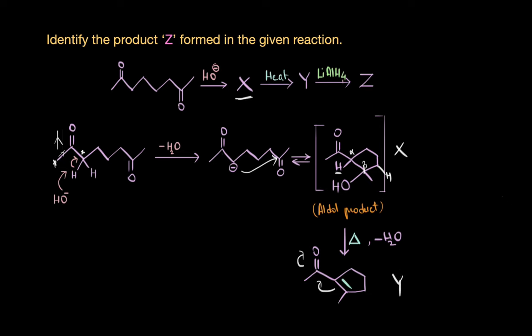In the last step we are treating Y with a strong reducing agent, lithium aluminium hydride. A keto group can reduce to secondary alcohol and the double bond can also reduce to give a saturated compound. But lithium aluminium hydride can only reduce the carbonyl group to secondary alcohol, whereas the unsaturation remains as it is. It cannot reduce the double bond.